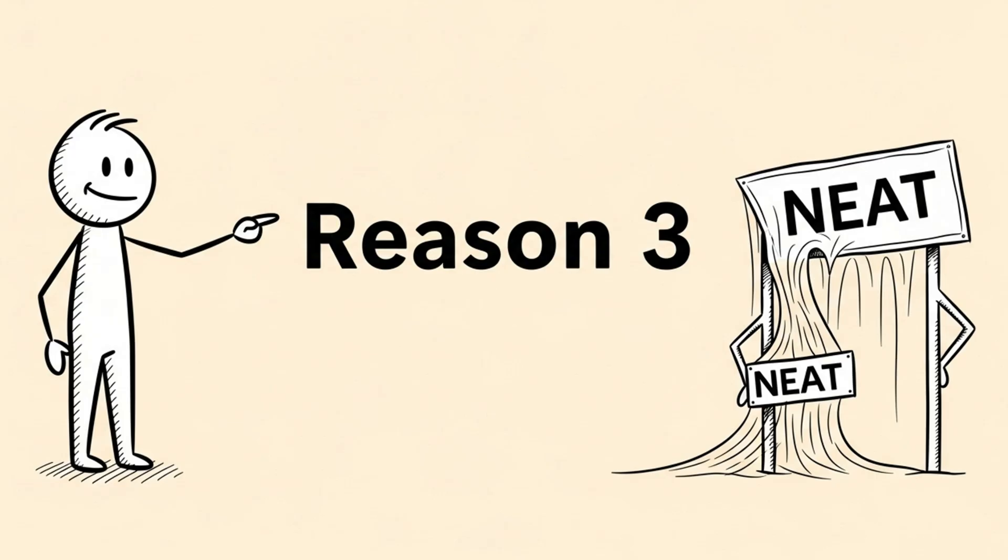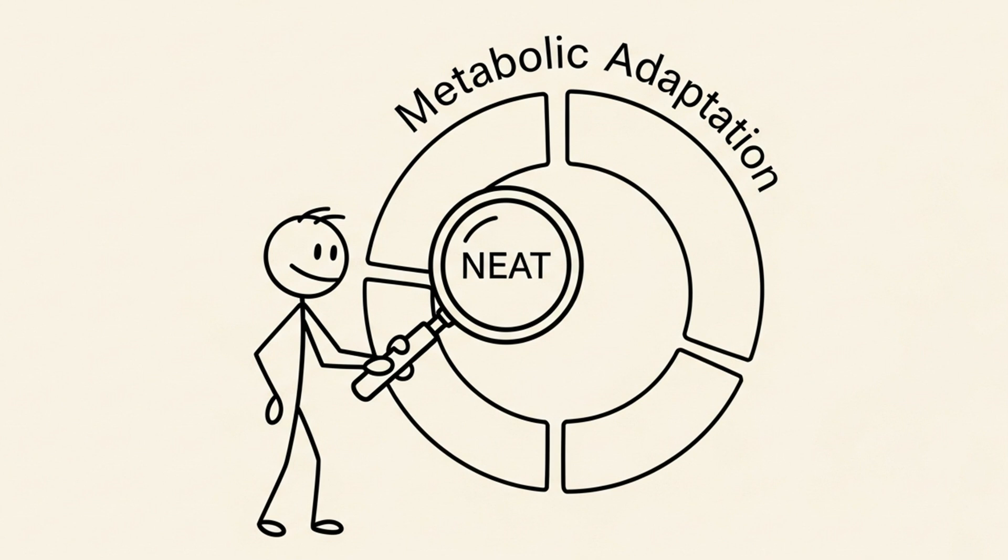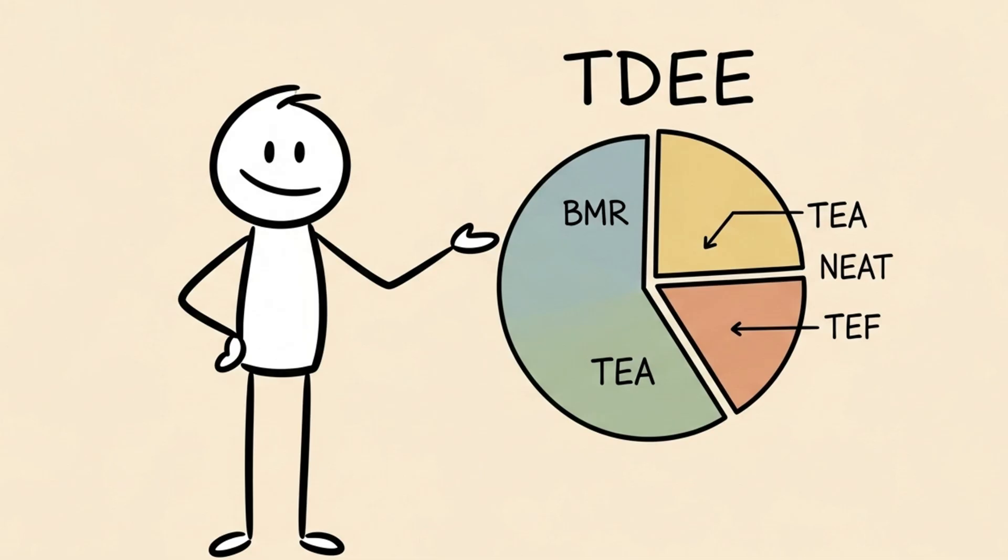Reason three, your NEAT has collapsed. This is part of metabolic adaptation, but it's so important we need to treat it as its own reason. Your calories out, TDEE, is made of four parts.